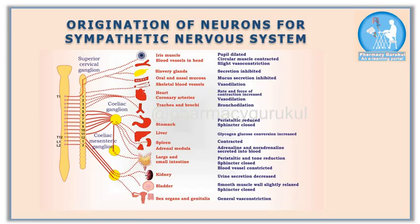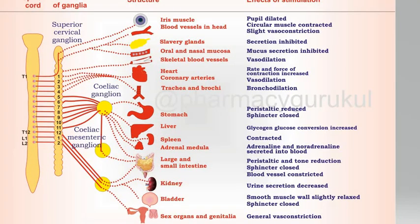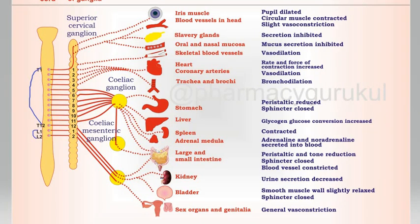Origination of neurons for the sympathetic nervous system. As you can see in the image, sympathetic nerves originate from the thoracic region, right from T1 to T12, and from the lumbar region from L1 to L2. This portion is the thoracic region and this portion is a part of the lumbar region. Because sympathetic nerves originate from the thoracic and lumbar regions, they are also called thoracolumbar outflow.